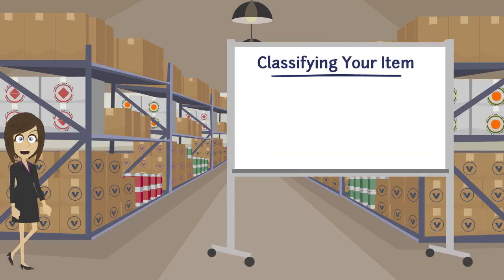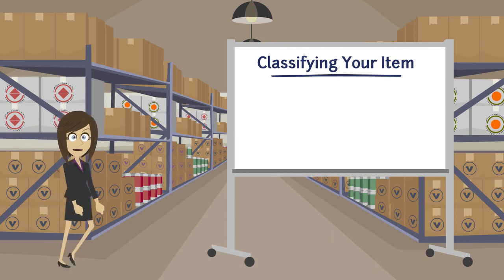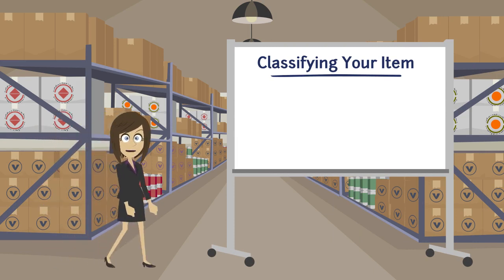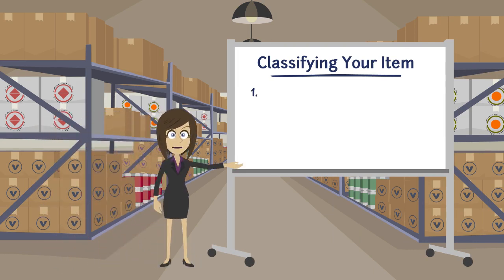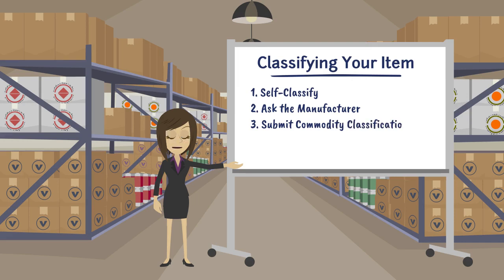There are three ways to determine the Export Control Classification Number. You can self-classify, ask the manufacturer, or submit a classification request to the Bureau of Industry and Security.